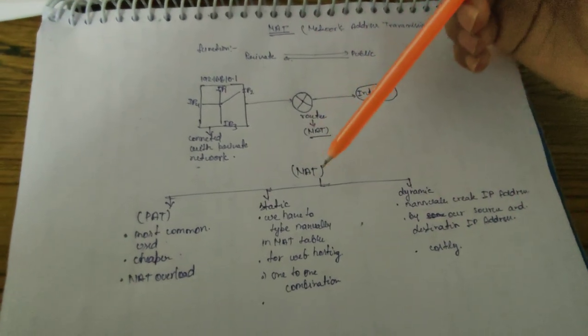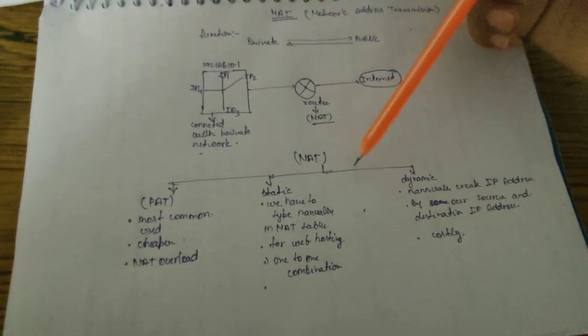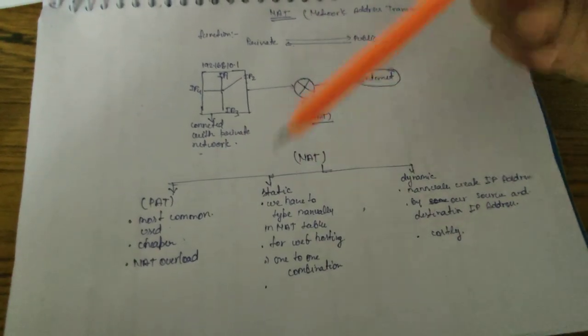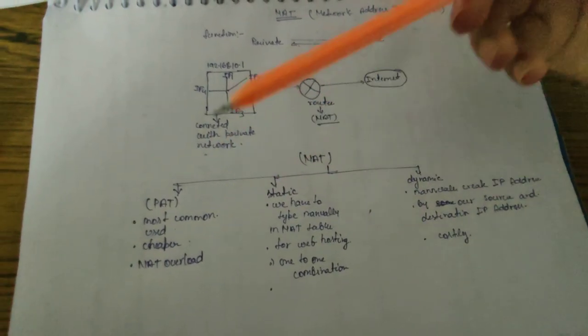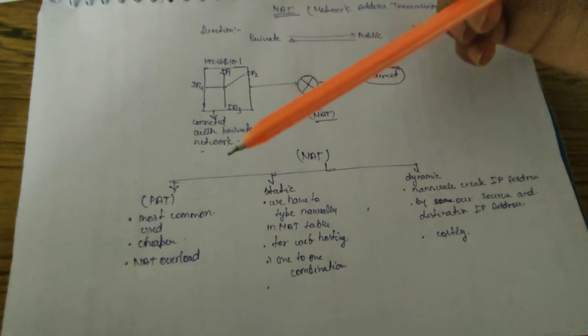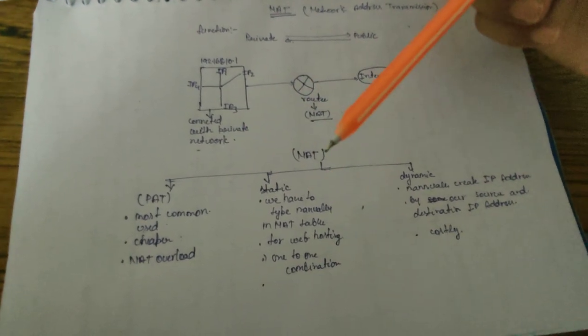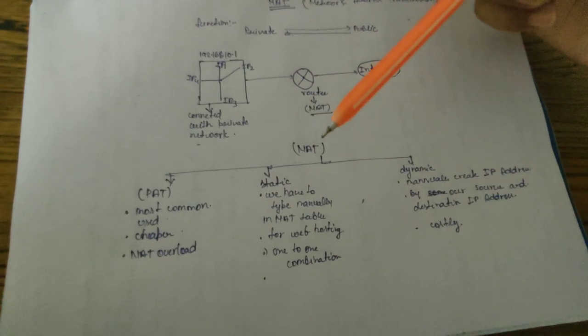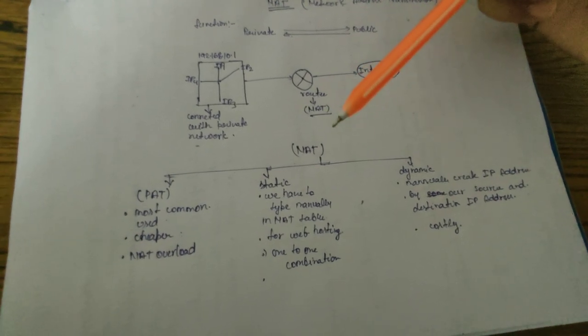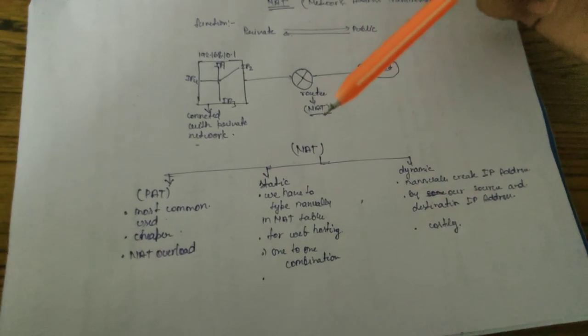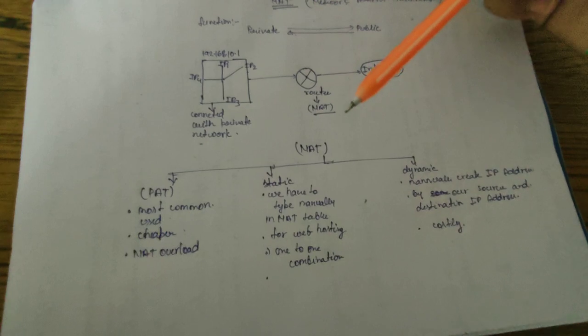And here are some types of NAT. So NAT has three types: PAT, Static, and Dynamic. PAT is the most commonly used and it is cheaper. It is also known as NAT overload because NAT is getting used by users over a large time, so it gets overloaded and maybe can stop working.